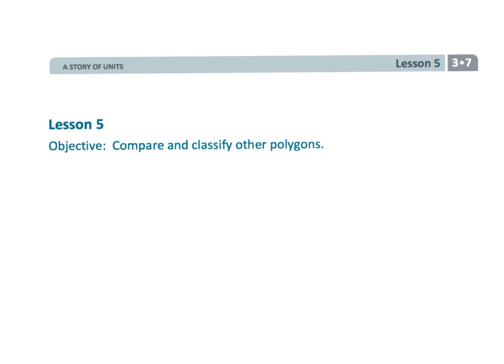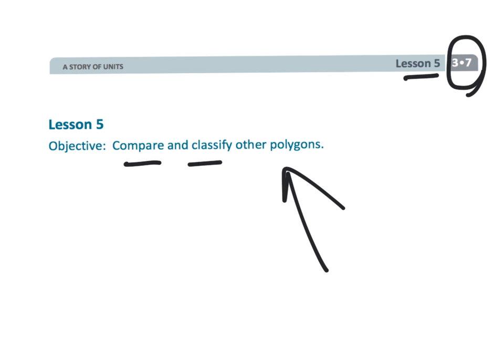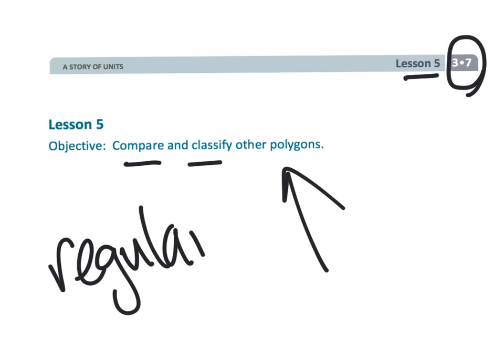That wraps up third grade Module 7, Lesson 5. We are comparing and classifying polygons, and in this lesson we were specifically talking about regular polygons.